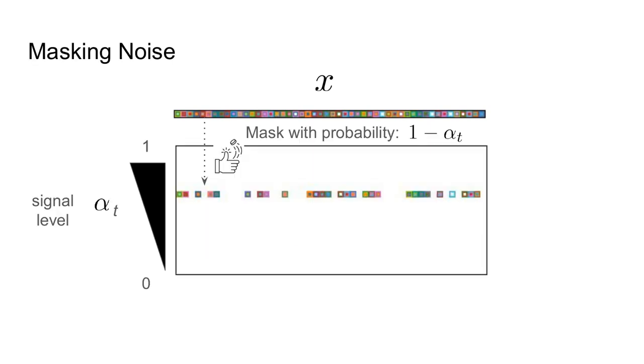Let's break this down in the same form as we looked at continuous diffusion. First, we need to consider our masking noise. We'll have a signal level, alpha t, which represents the chance of masking at each location. Given alpha t, we simply flip a coin and mask out words with probability 1 minus alpha t. At the top of the slide, we do no masking, and at the bottom of the slide, we mask each token.